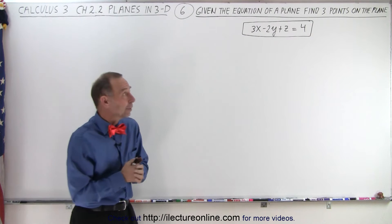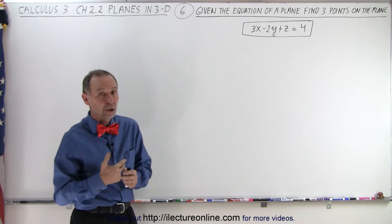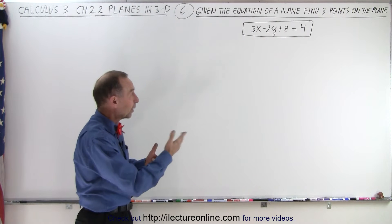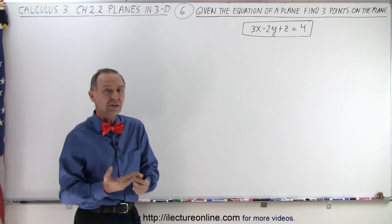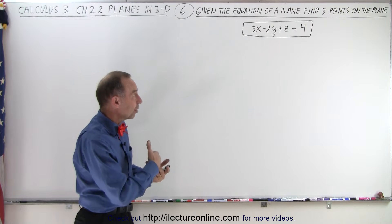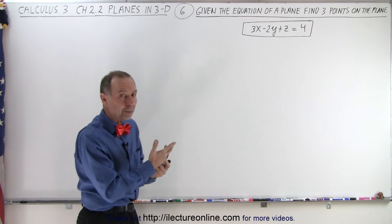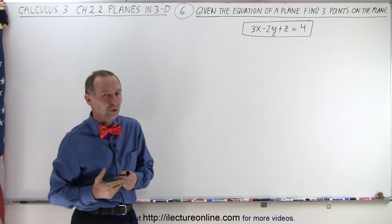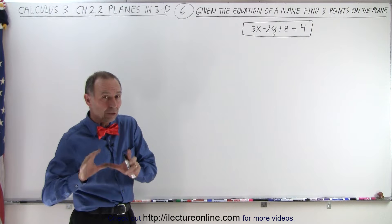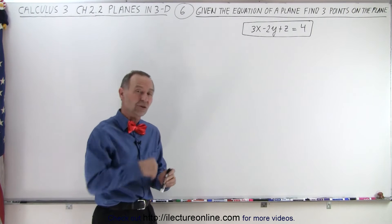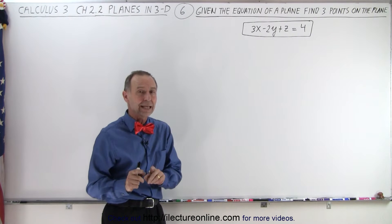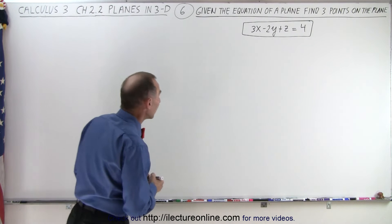What we need to do is take 2 of the 3 variables — x, y, and z — assign values to them, and then solve for the 3rd variable. That's how we find the points. We're going to take those 3 points and see if we can get the original equation back using the technique that we learned in the previous video.